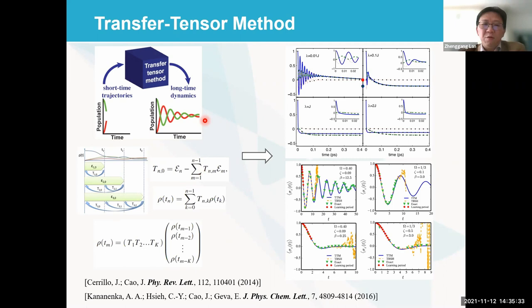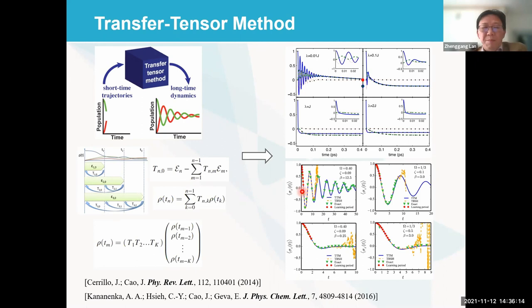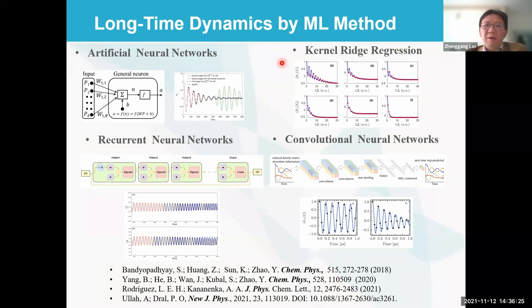This is basically a kind of autoregression model. In the financial field, many people use such autoregression models to predict stock market fluctuations. This is very interesting because it means we can learn dynamical features from short-time propagation and then use the same model to predict long-time evolution. This idea was also demonstrated to work for mixed quantum-classical master equations. However, this is a linear autoregression model, and we can think about using a nonlinear machine learning model to build a nonlinear mapping model for dynamic propagation.